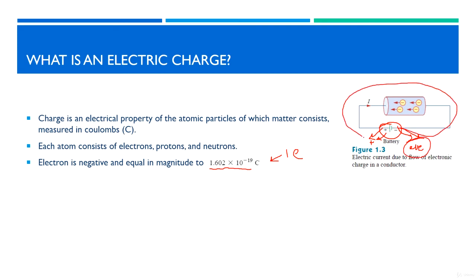The negative charges want to move from the negative terminal toward the positive particles, similar to how in a magnet the negative charges are attracted to the positive charges, while positive and positive repel each other. So the negative electrons flow through the circuit, and this is what forms our electric current, which we will discuss in the next video.